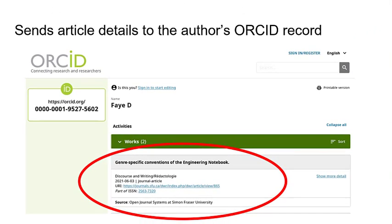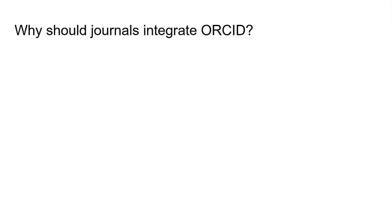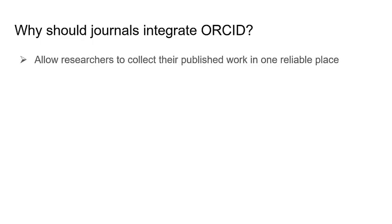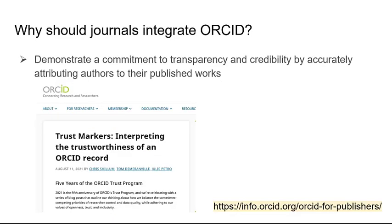Finally, thanks to the member API, the published article details will automatically be added to the author or contributor's ORCID record page, so they don't need to log into ORCID and add the article details themselves. There are a few ways that journals will benefit if they choose to implement the ORCID plugin with the member API. Journals can support their authors by giving them an easy way to connect their published research to their ORCID record. This gives authors a reliable collection of all their published work which will remain accurate and consistent regardless of changes in role, institution, or a change to their first or last name. In addition to supporting authors, integrating ORCID in your journals demonstrates a commitment to transparency and credibility by accurately attributing authors to their published works and authenticating articles through a trusted resource.